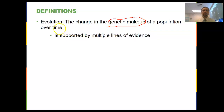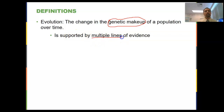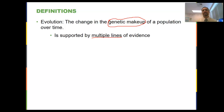It's really important to know that evolution, because it is such a controversial topic and many people either don't believe in it or try to downplay it, is indeed supported by multiple lines of evidence. You will also hear people argue that evolution is 'just a theory,' so it's important to discuss what a scientific theory actually is versus a scientific law.